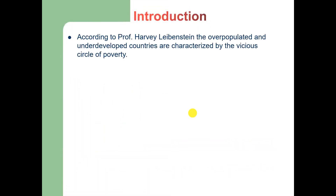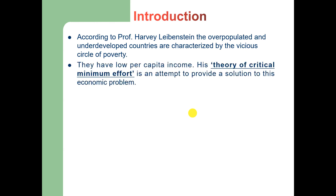According to Levenstein, the underdeveloped countries are caught up in a vicious circle of poverty. The theory of critical minimum effort is an attempt to break this vicious circle of poverty, as underdeveloped countries have low per capita income.